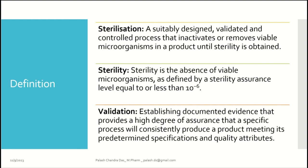How do we obtain sterilization? Through validation. Validation is established documented evidence that provides a high degree of assurance that a specific process will consistently produce a product meeting its predetermined specifications and quality attributes. So sterilization is a process, sterility is a state achieved after successful sterilization, and it happens through a controlled validation technique.